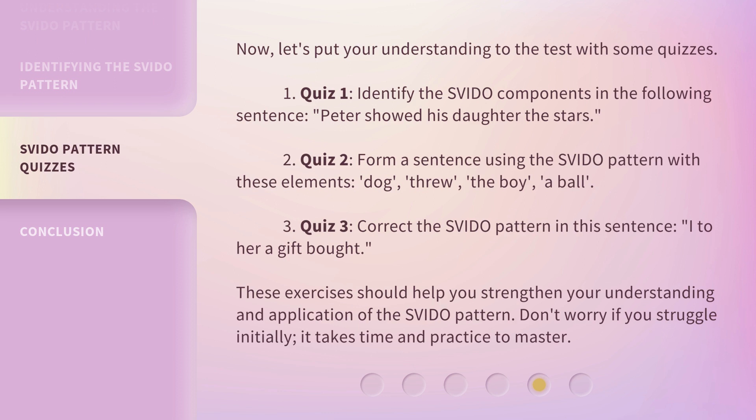Quiz 3: Correct the SVIDO pattern in this sentence — I to her a gift bought. These exercises should help you strengthen your understanding and application of the SVIDO pattern. Don't worry if you struggle initially — it takes time and practice to master.